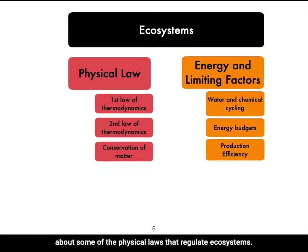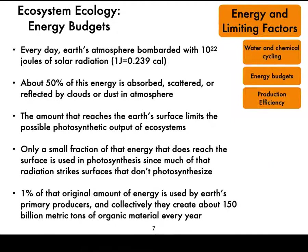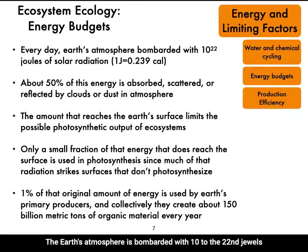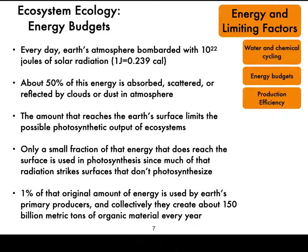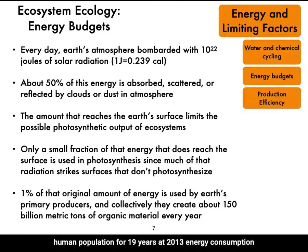Now that we've talked about some of the physical laws that regulate ecosystems, let's look at ecosystems' energy and limiting factors. Each day, the Earth's atmosphere is bombarded with 10 to the 22nd joules of solar radiation. This is enough energy to supply the demands of an entire human population for 19 years at 2013 energy consumption levels.